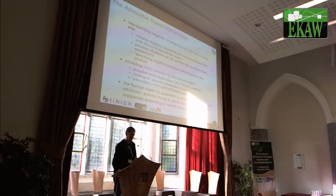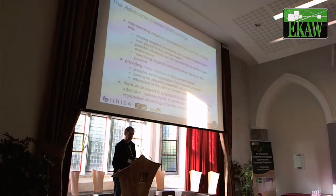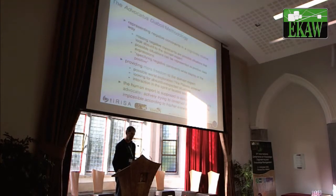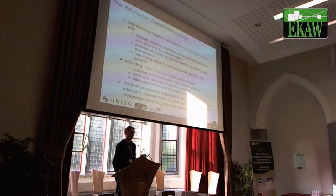We propose here an alternative: the advocatus diaboli methodology. The first principle is to represent negative constraints in a cognitively intuitive way. If you look at missing negative constraints, you can see them as possible situations — situations that are possible according to the ontology, but that look absurd to the domain expert. For instance, you can have something that is a man and a woman at the same time. This may be possible for the ontology, but obviously it is absurd for the domain expert.